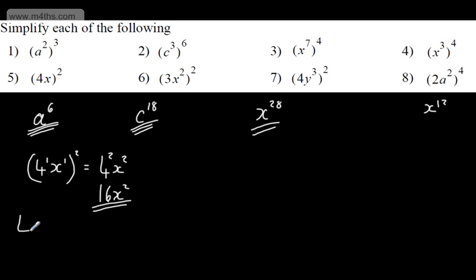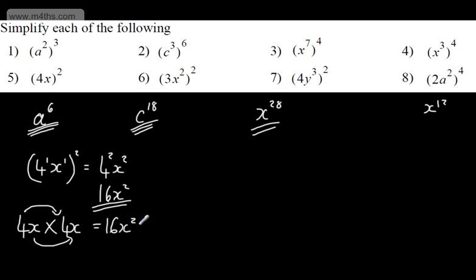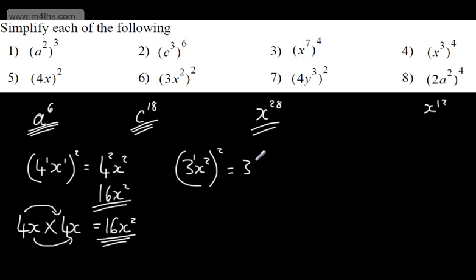This is the same as 4x multiplied by 4x. We know if we square a bracket we're simply multiplying it, so 4 times 4 is 16, and x times x is x squared — either way it holds true. Being careful with 3x squared all squared: putting my little 1 on, we get 3 squared times x to the power of 4, which we write as 9x to the power of 4.